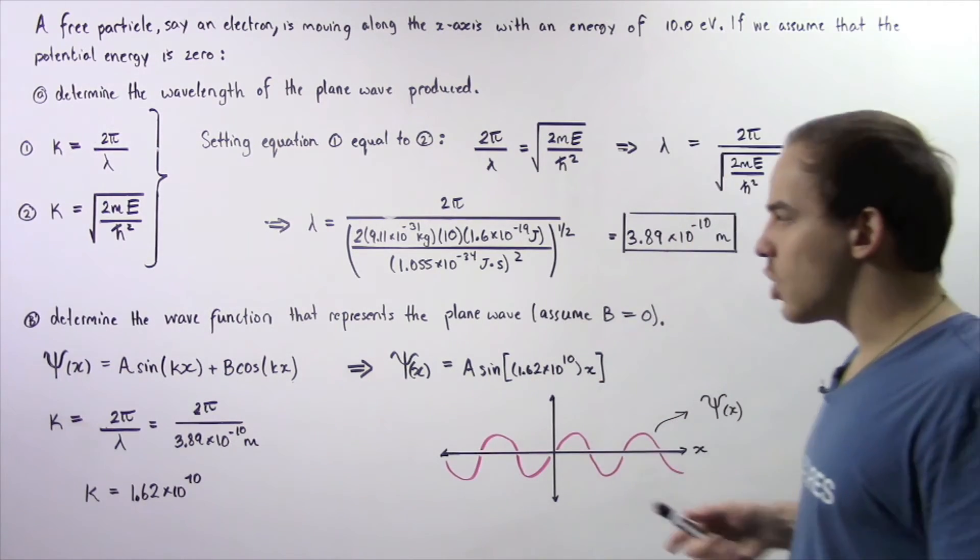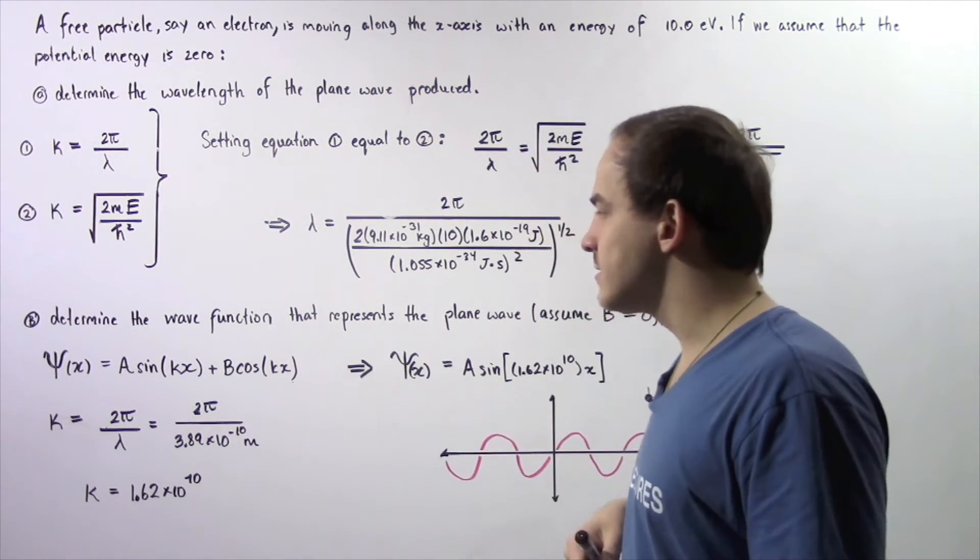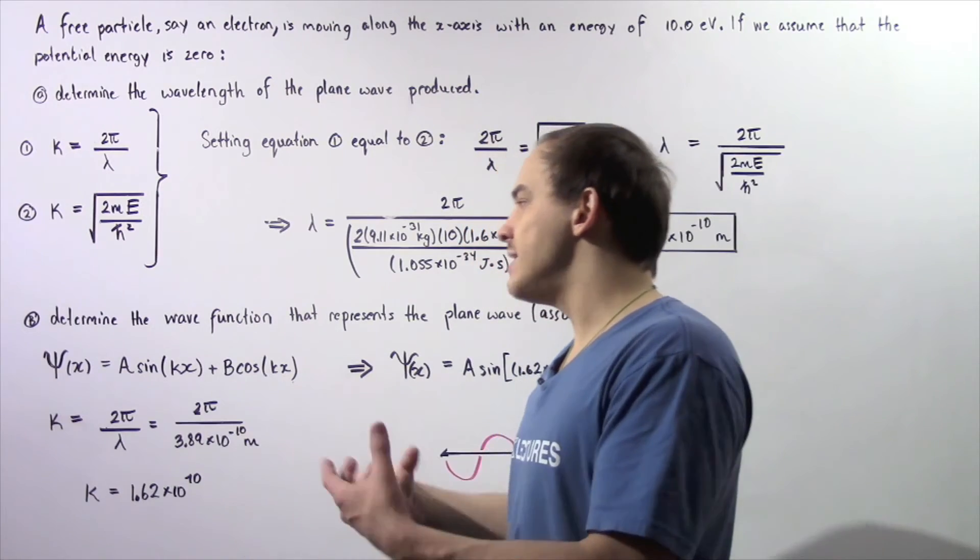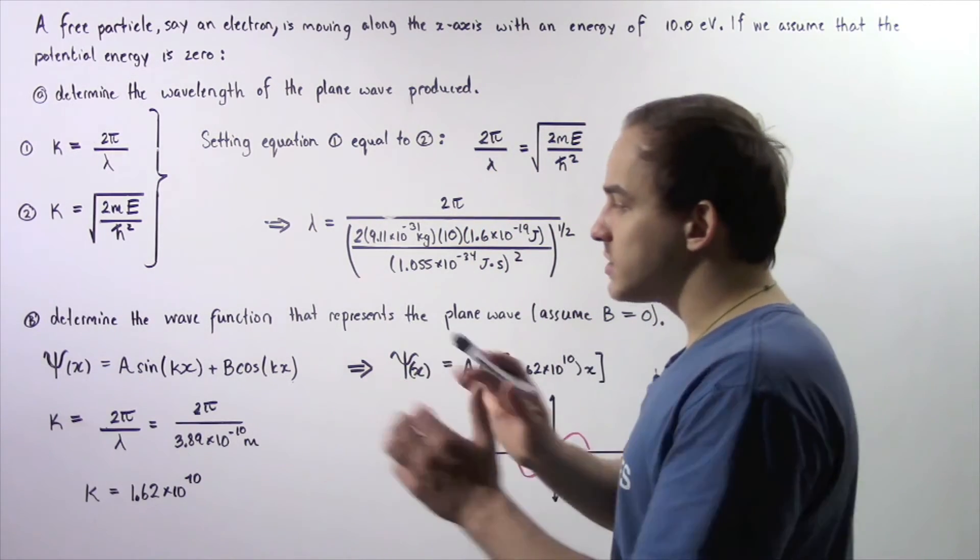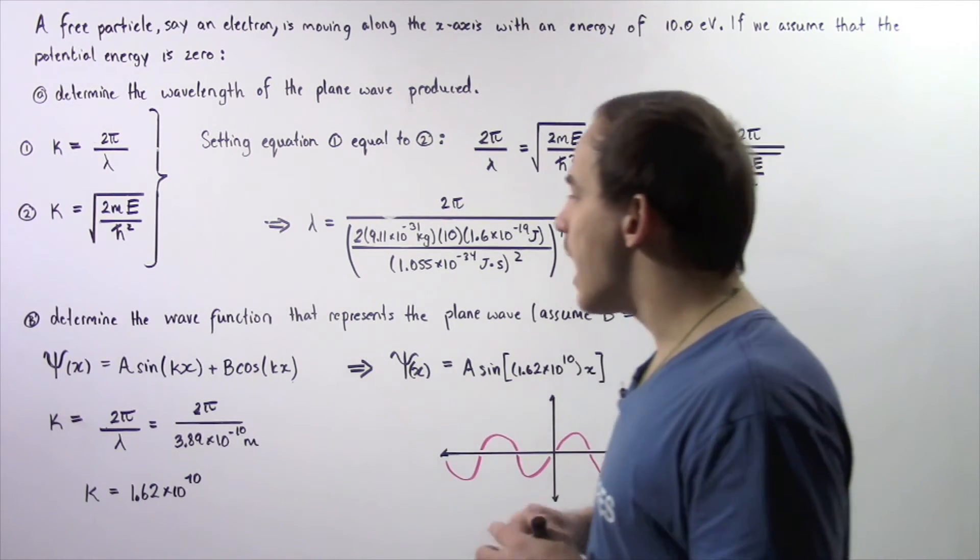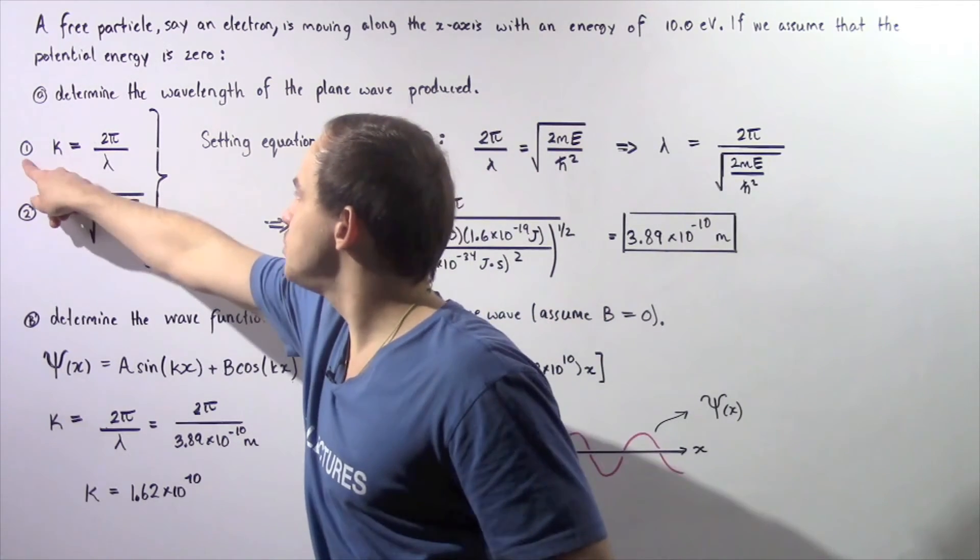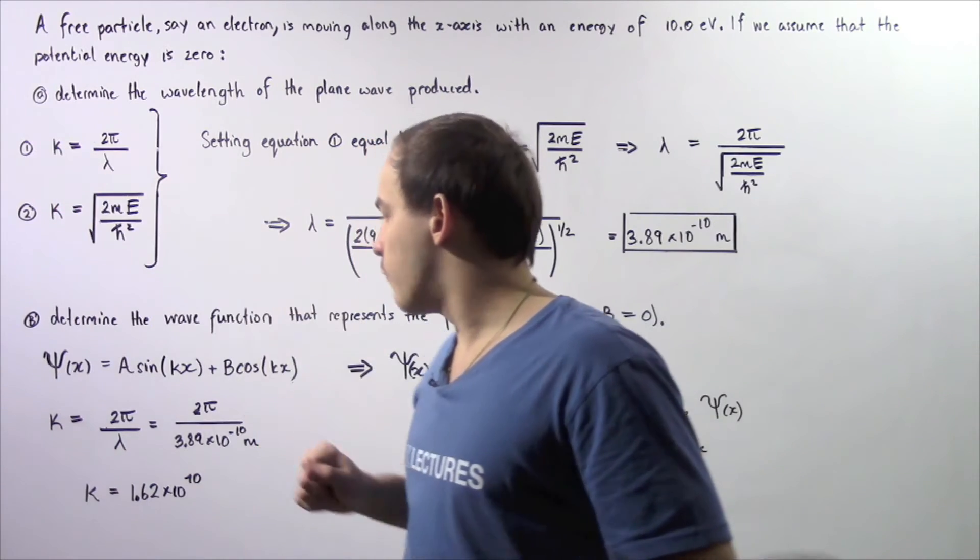We know that b is equal to 0, so the second term cancels out, and A is simply an unknown constant that we cannot solve. So we're going to leave that as it is. But we can solve for k using equation 1.